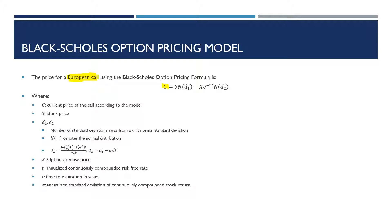So the call option premium — which is the amount that you should be paying in the market — is equal to a couple of constituent components. First we have the stock price, then we multiply that by this term called ND1. D1 is a variable that we'll end up determining, and ND1 is the area under the curve after we calculate D1, under the curve of a unit normal distribution. In the second part of the equation, we have the strike price. We then discount it back using the continuously compounded risk-free rate — that exponentiated term is basically enabling us to get the present value of the strike price. We then multiply it by ND2, which again gives us the area under the curve of a separate variable.